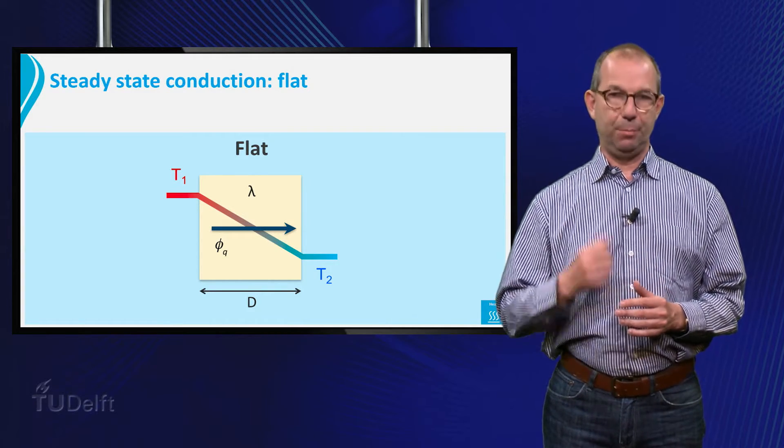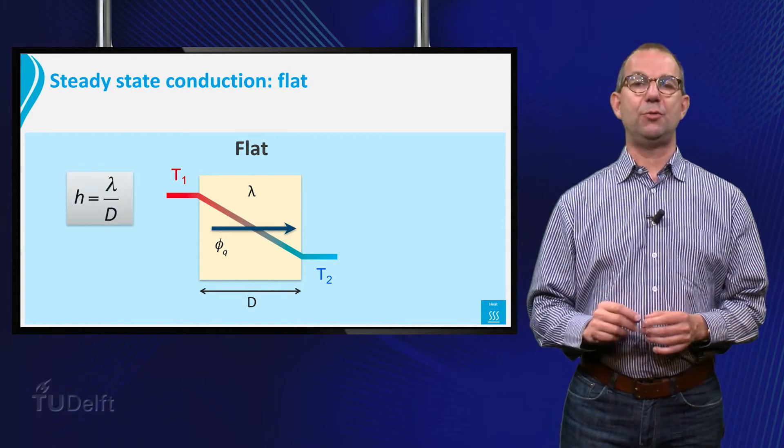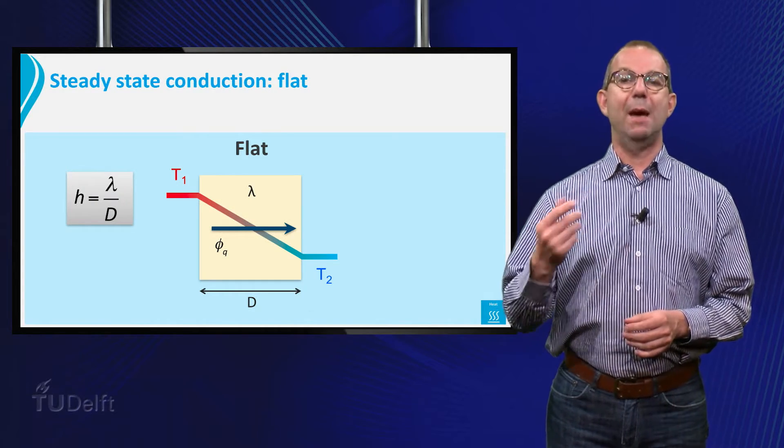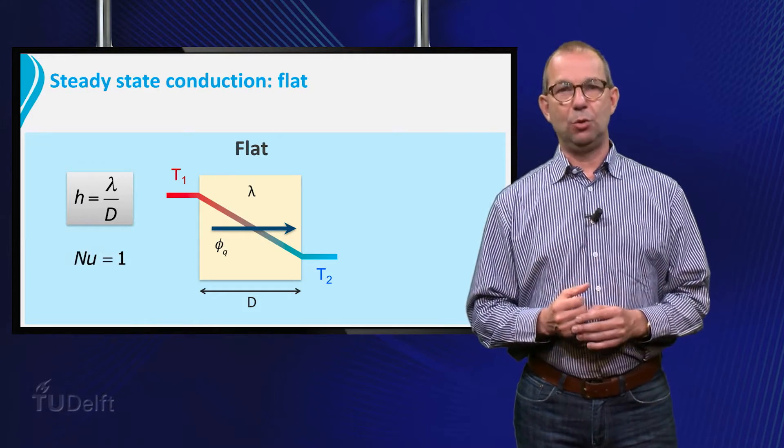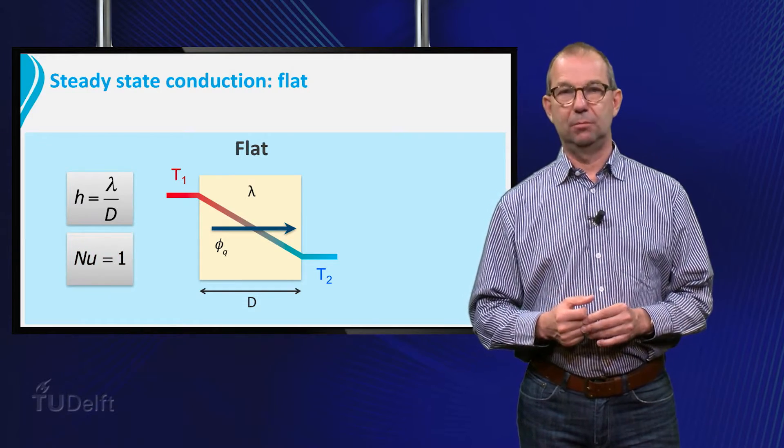We could put this in a simple relation: the heat transfer coefficient h equals lambda over d. Or if you want, we could give this as a Nusselt number, Nusselt is 1.